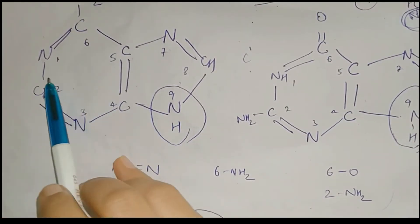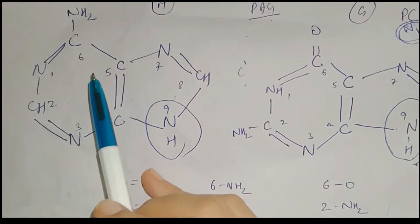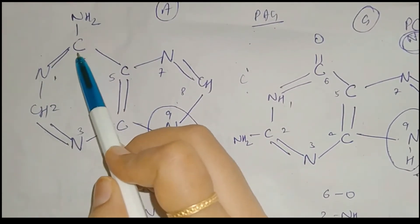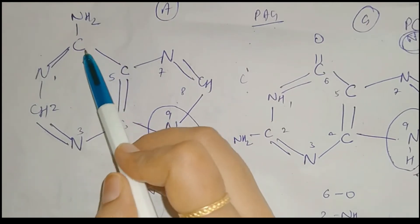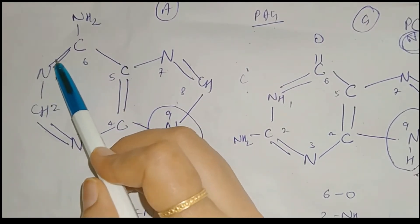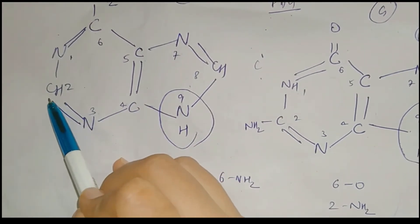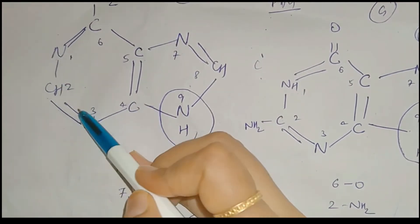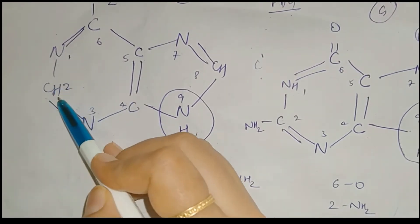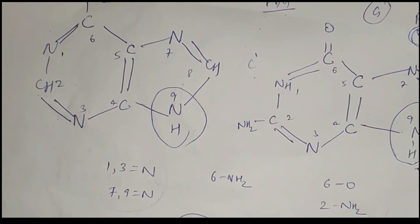One more thing to check is whether the valency of nitrogen and carbon are satisfied or not. Carbon has four valencies — if all four are satisfied, no H is added. Nitrogen has three valencies — if all three are satisfied, no H is added. But if a carbon has only three bonds formed, it will have one H with it. In this way, if you check the valencies, you will be able to draw all the structures.